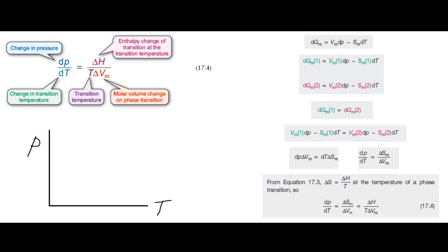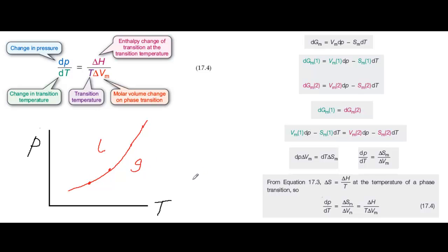Phase diagrams, like the one I'm sketching here, show the conditions for equilibrium between phases — the liquid phase and the gas phase in this example. You can create phase diagrams using experimental data. You measure the boiling temperature at different pressures, for example, and that gives you the points on this line.